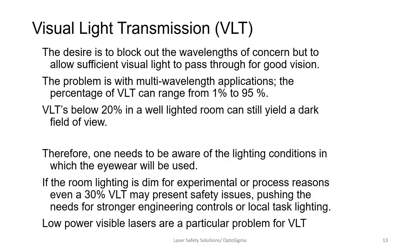Visual light transmittance, or VLT, is essentially how well you can see with your eyewear on — how much visible light gets through. Some eyewear filters have a VLT as low as 1% while others are as high as 95% or higher. The general feeling is that in a well-lit room you need a VLT of at least 20% for decent vision. Being aware of the lighting conditions in your work area is extremely important. If room lighting is good, 30% VLT is really a good number. If lighting is very low, task lighting may help.